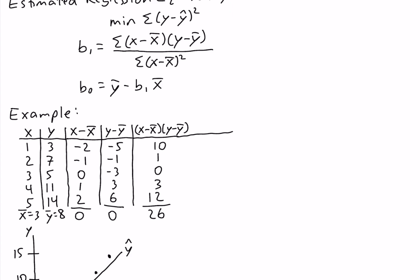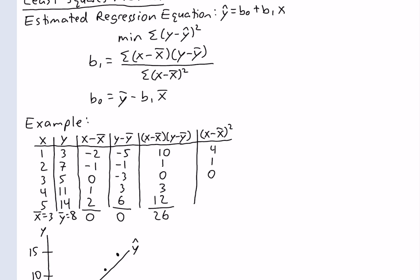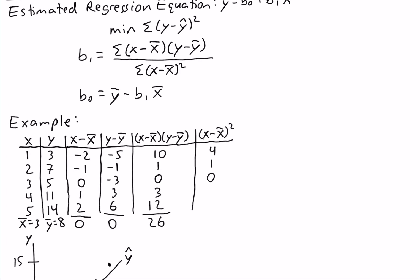Our final column is the denominator of b1: (x minus x-bar) squared. Negative 2 squared is 4, negative 1 squared is 1, 0 squared is 0, 1 squared is 1, and 2 squared is 4. This column sums to 10.